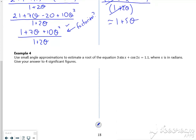Example 4. So it says use small angle approximations to estimate the root of the equation 3 sine x plus cos 2x equals 1.1.